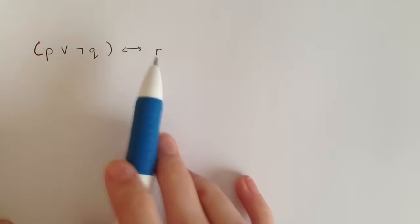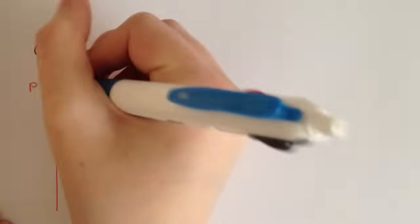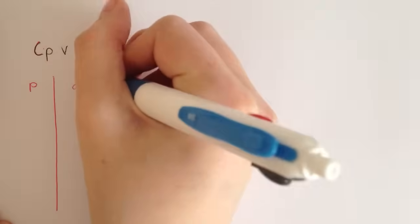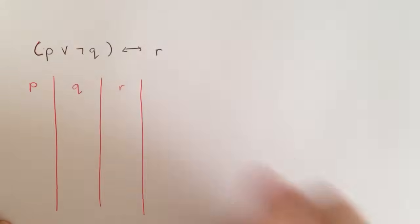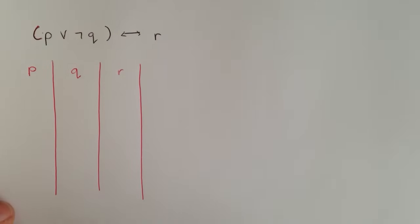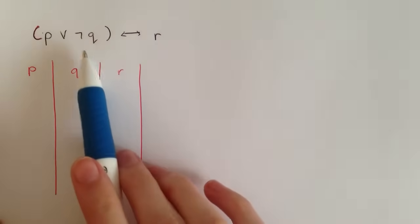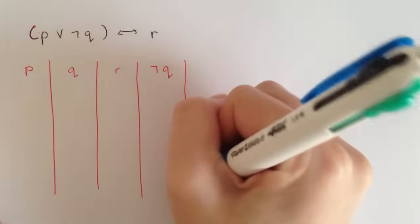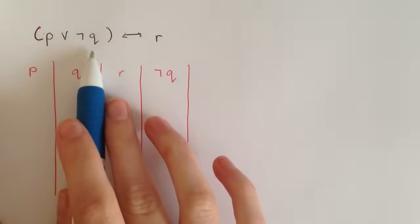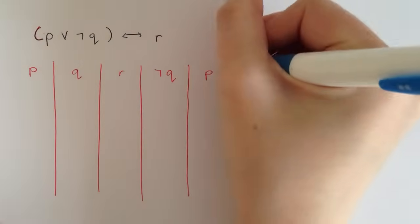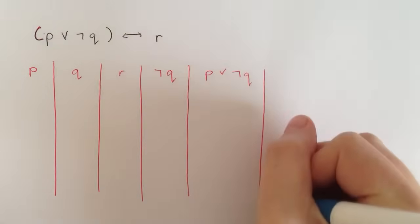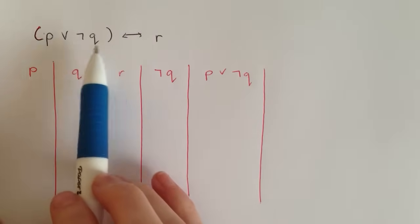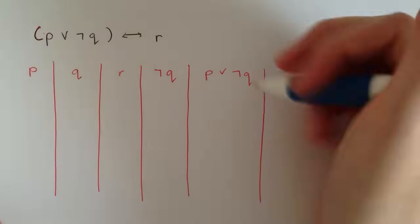This one is a little different in that we've got three different letters: p, q, and r. So we want a p column, a q column, and an r column. We also have not q, so that's another column we want. And we have p or not q, and then finally the full expression p or not q if and only if r.